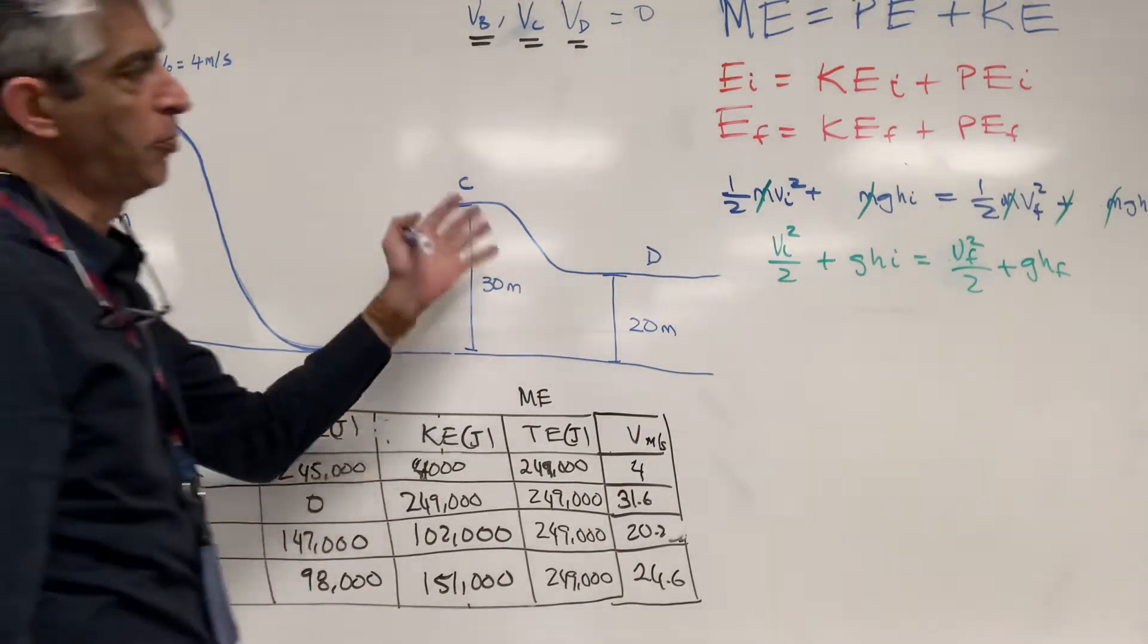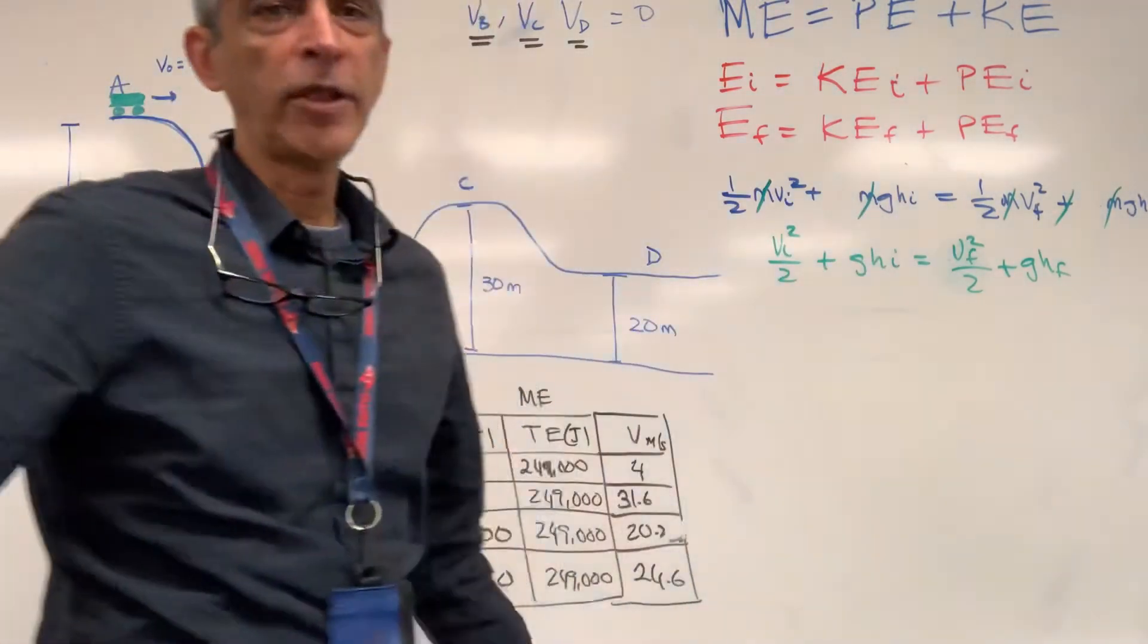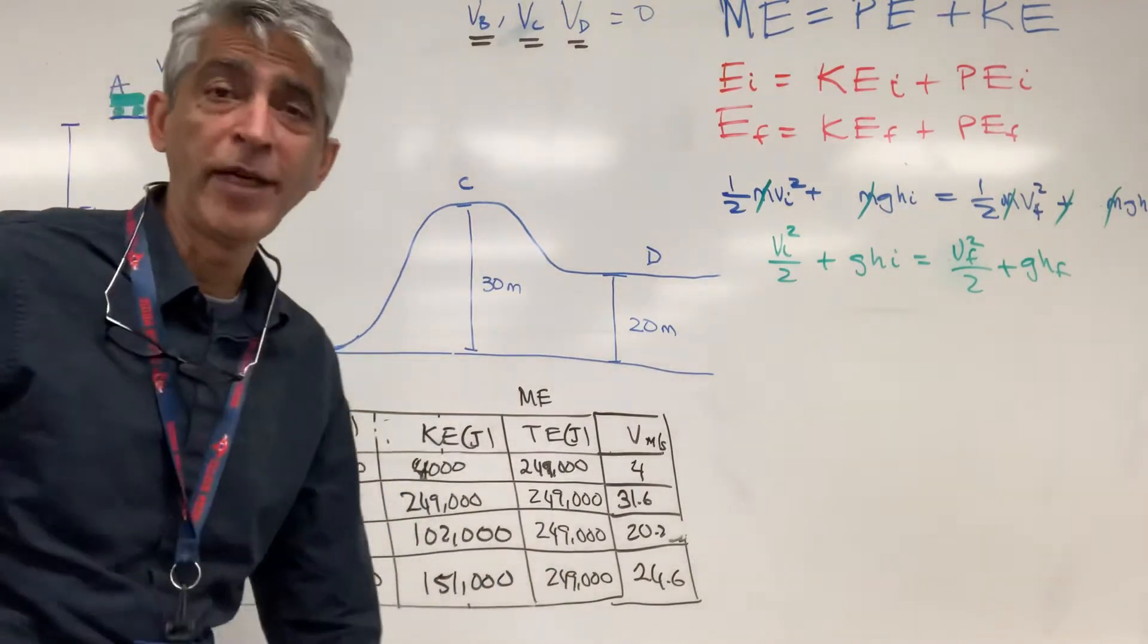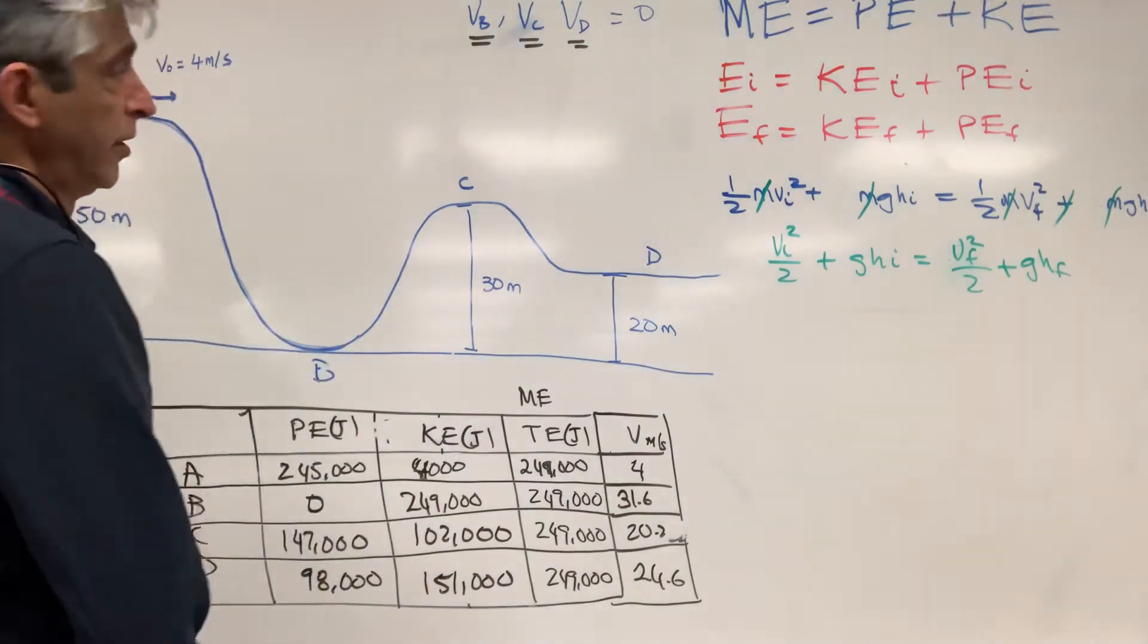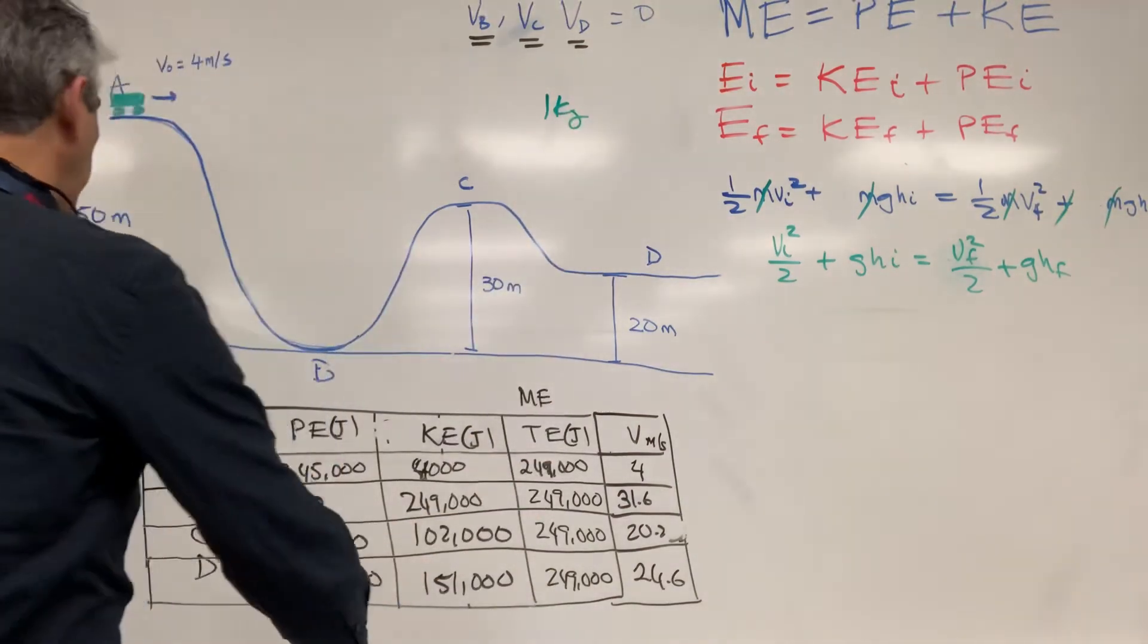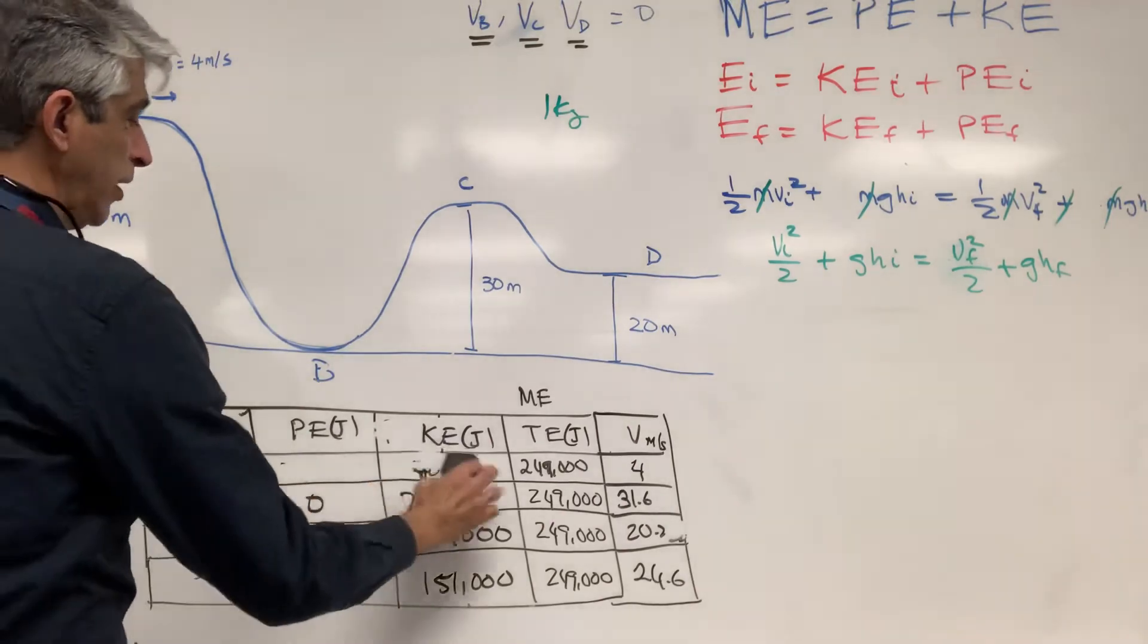Well, since you see that mass doesn't matter, you can make up your own mass. So you just say, I'm going to say mass is equal to, what should we make? An easy number, right? Make sense? So how about I make mass one kg? And so you can do this whole thing over again, with one kg.